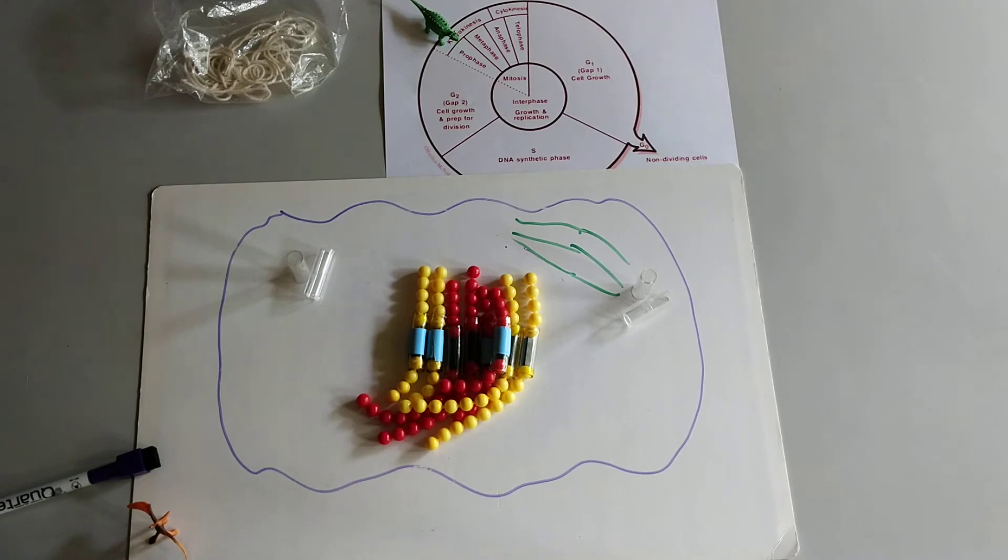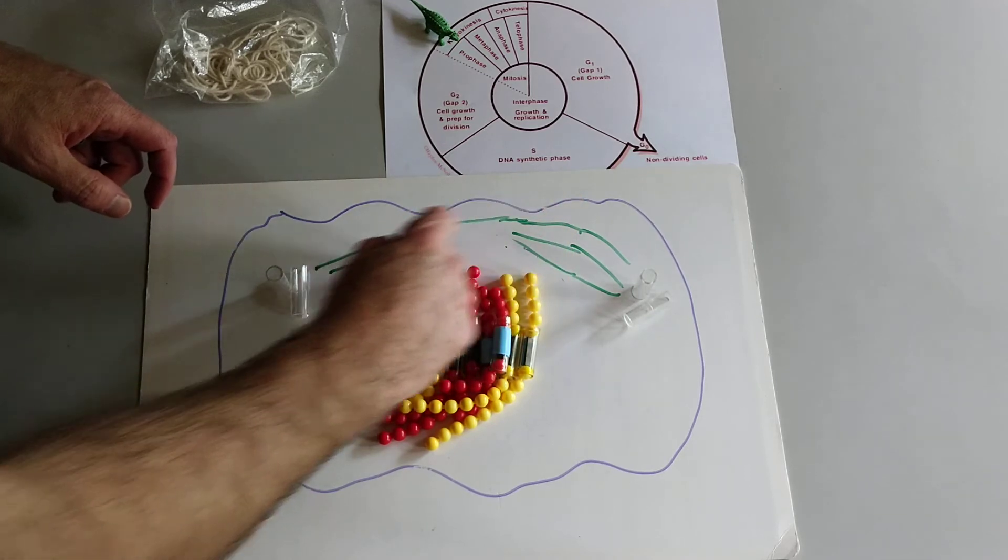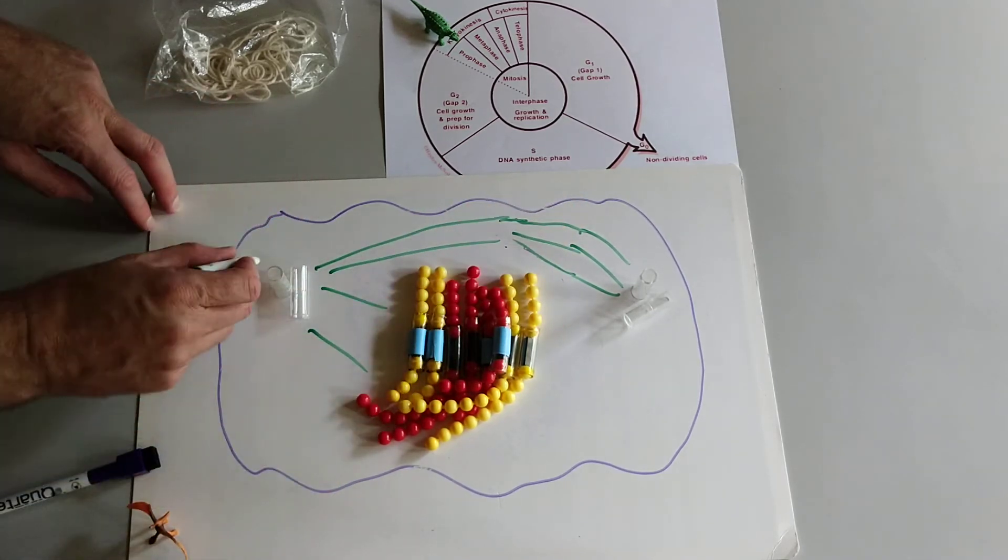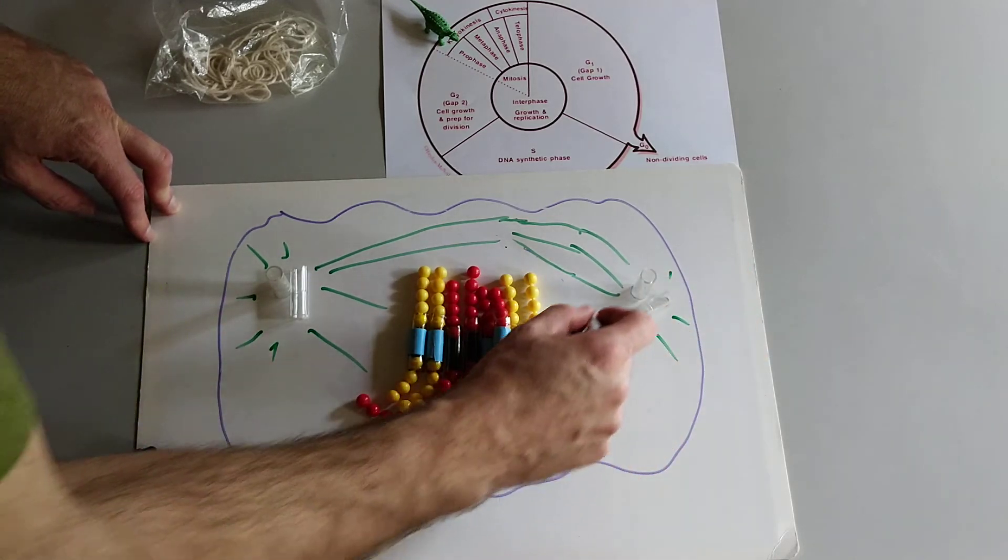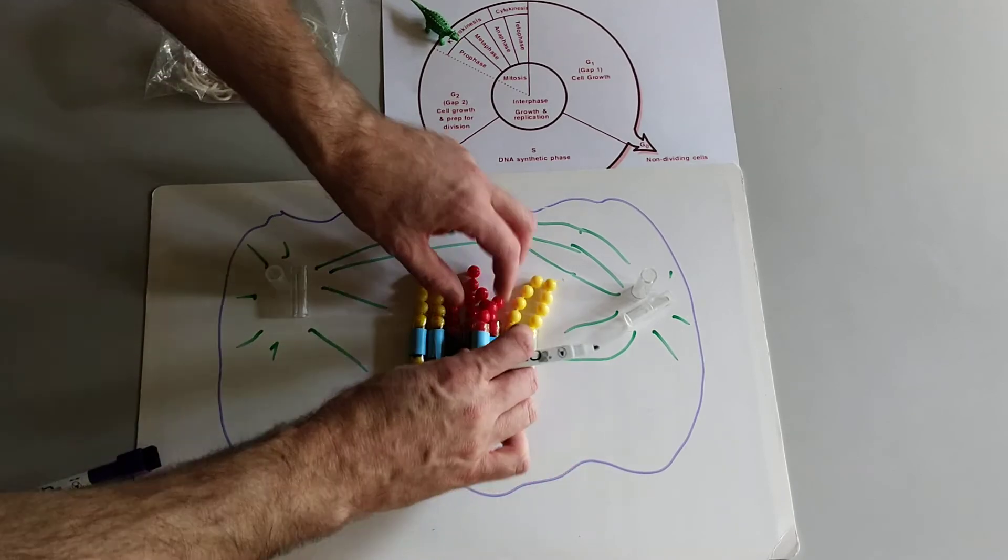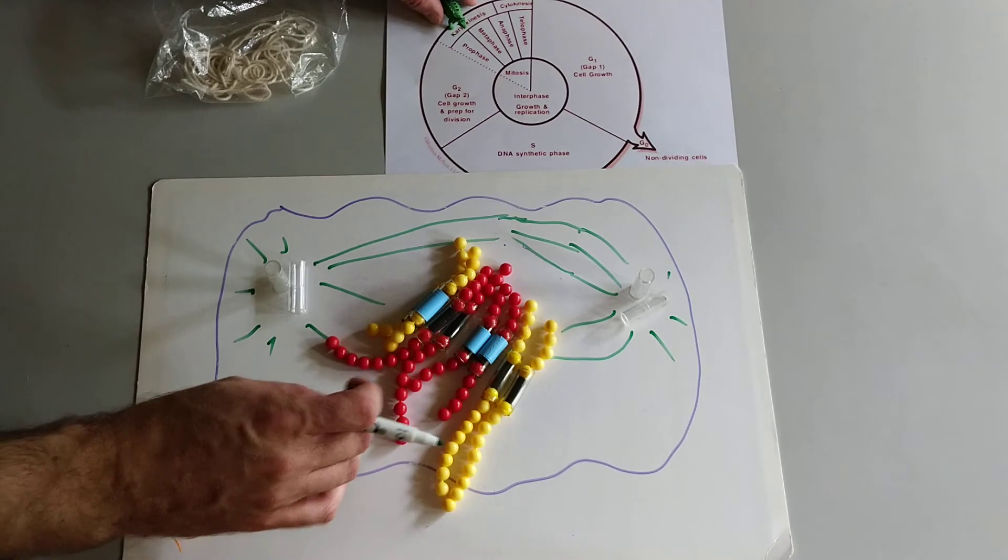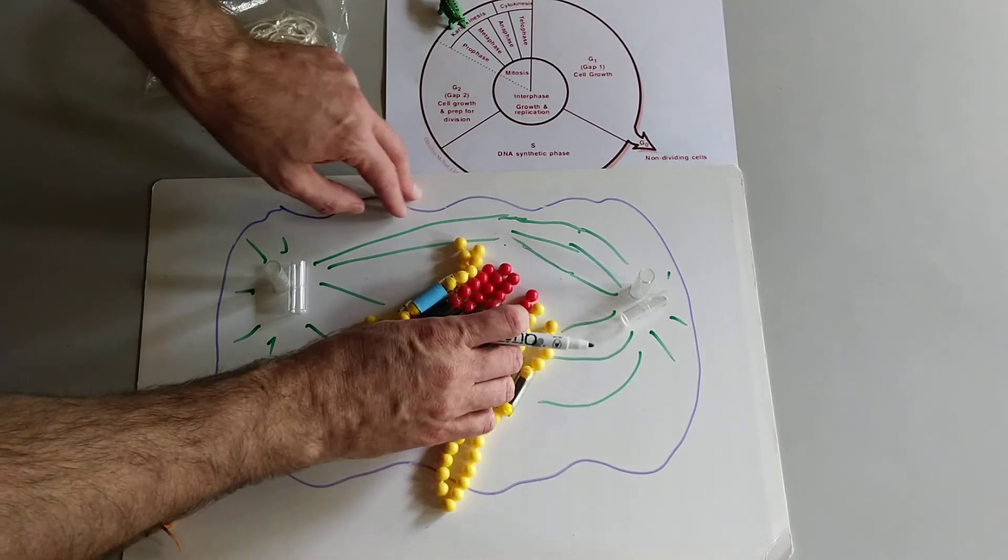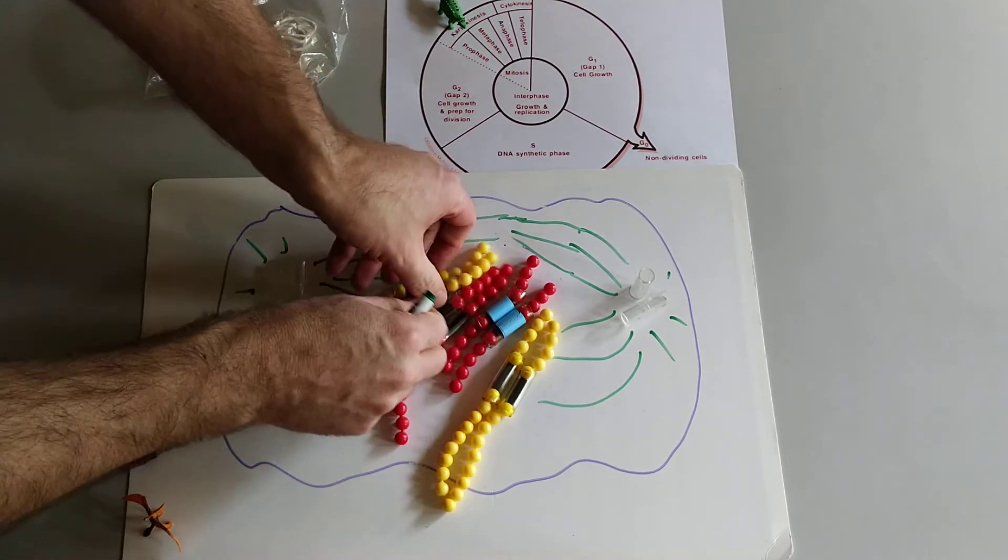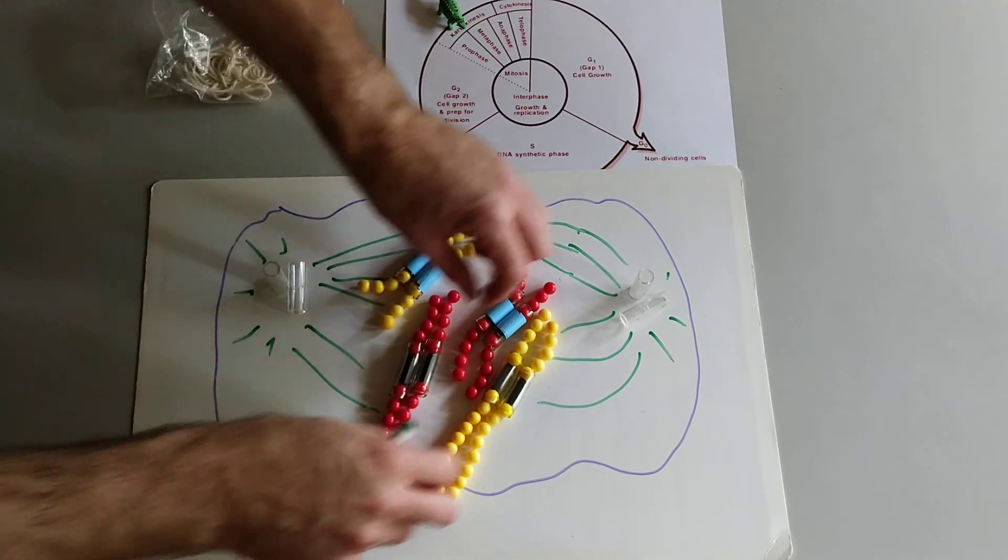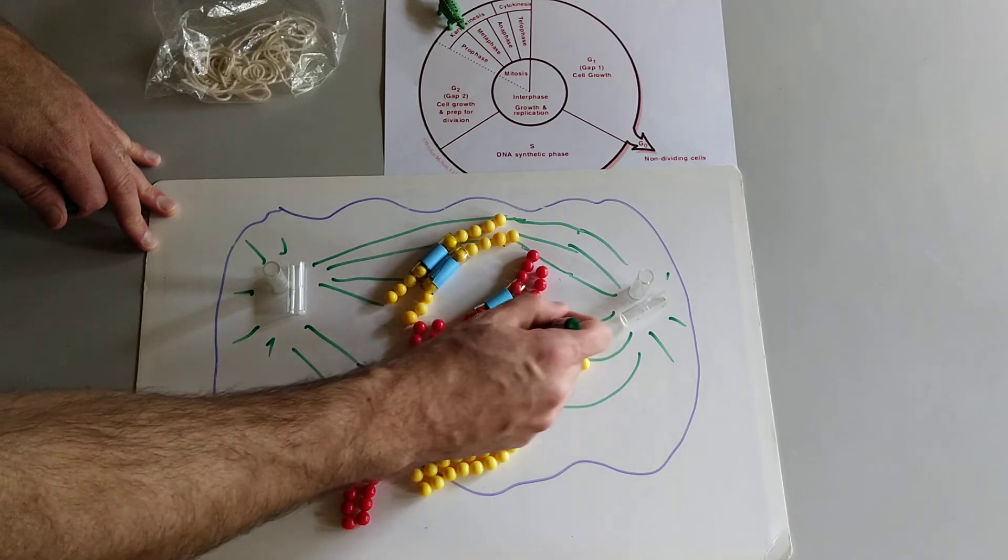And then the spindle fibers, which are kind of radiating out from the centrosome, kind of in all directions really. Some of those are going to start attaching to the chromosomes. So here we're getting towards late prophase. So this is maybe towards late prophase.